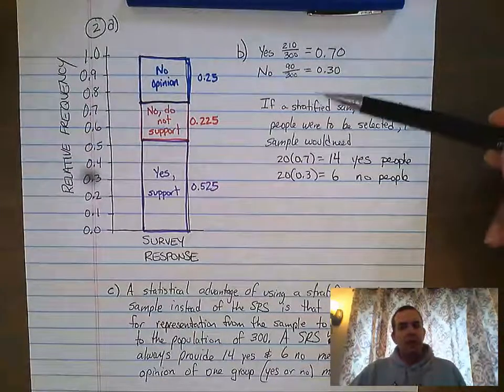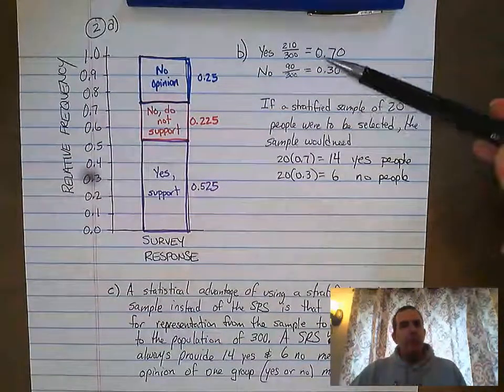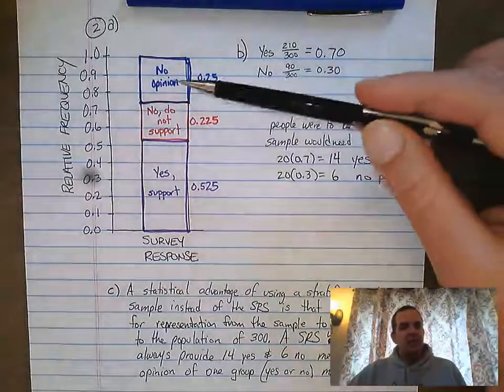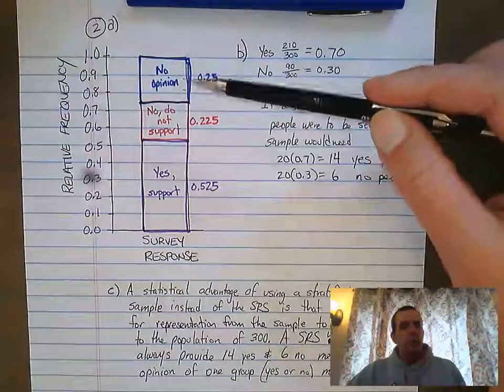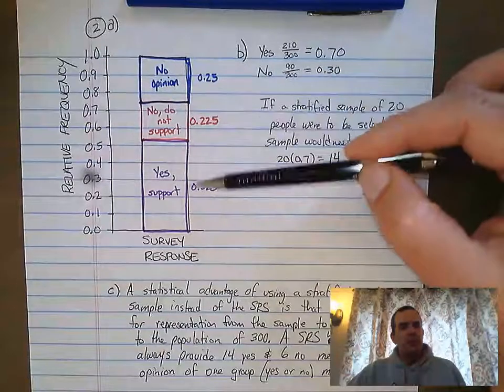They said that what they wanted to do is create a stratified sample from the people who said yes and no. So what they did is they eliminated these 100 people who had no opinion, and they just dealt with the 300 people here.